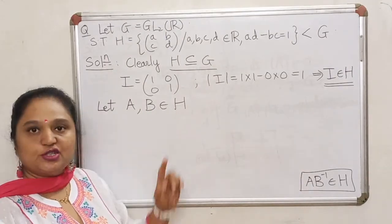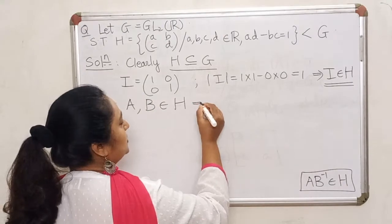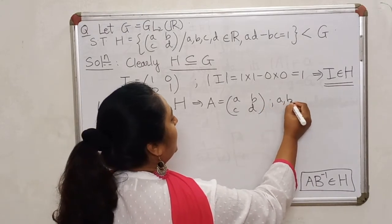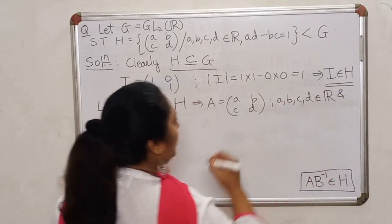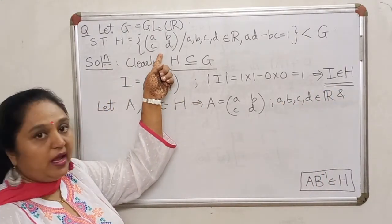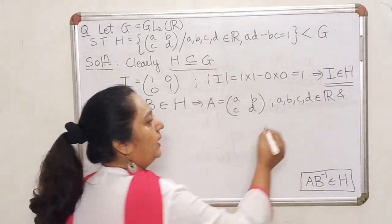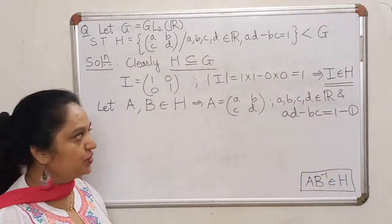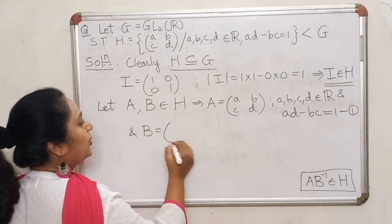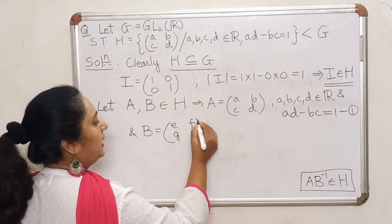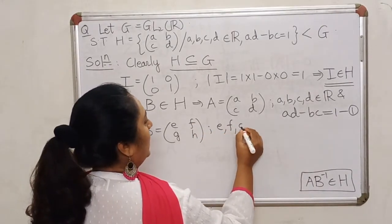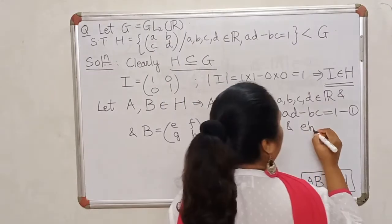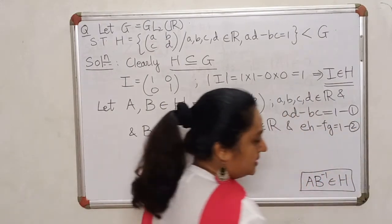Since A and B are elements of H, they are 2×2 matrices. So A = [[a,b],[c,d]] where a, b, c, d are real numbers, and more importantly, since A is in H, det(A) = ad − bc = 1. Call this equation 1. Similarly B = [[e,f],[g,h]] where e, f, g, h are real numbers, and det(B) = eh − fg = 1. Call this equation 2.